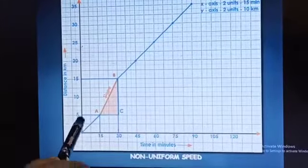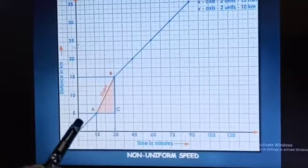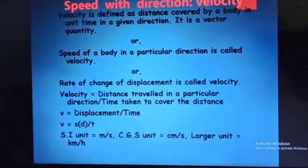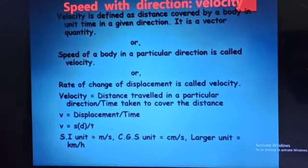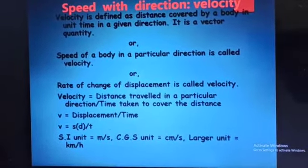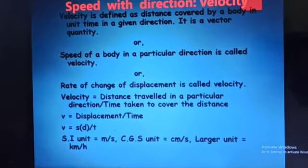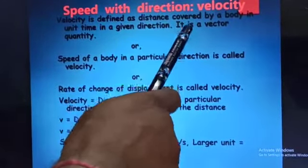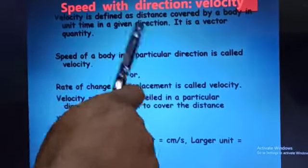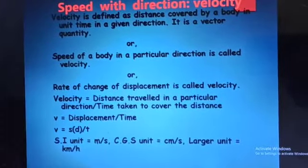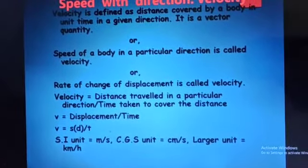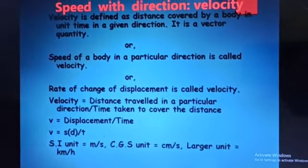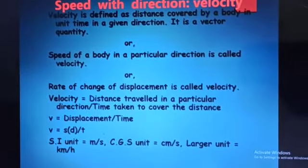We can see the distance-time graph for non-uniform speed. Speed with direction is known as velocity. Velocity is defined as the distance covered by a body in a unit time in a given direction. It is a vector quantity, having both magnitude and direction. The speed of a body in a particular direction is called velocity, and the rate of change of displacement is also called velocity.